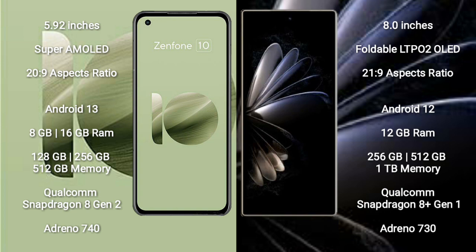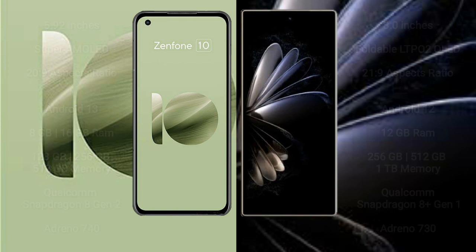The Asus Zenfone 10 comes with 8GB or 16GB RAM and 128GB, 256GB, or 512GB internal storage, powered by the Qualcomm Snapdragon 8 Gen 2 processor with Adreno 740 GPU. The Xiaomi Mix Fold 2 comes with 12GB RAM and 256GB, 512GB, or 1TB internal storage, powered by the Qualcomm Snapdragon 8 Plus Gen 1 processor with Adreno 730 GPU.